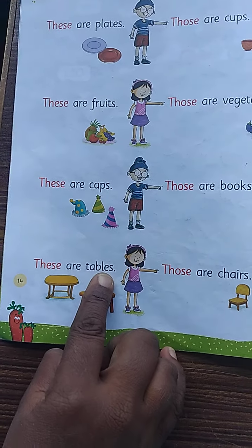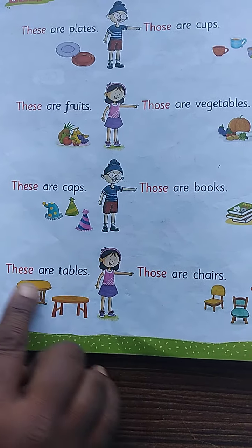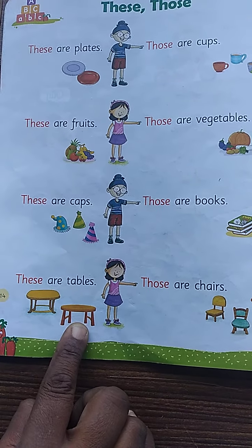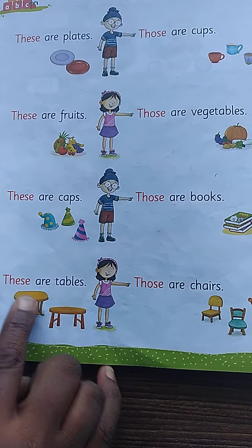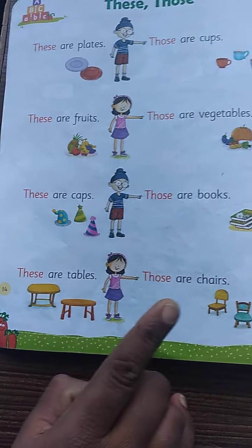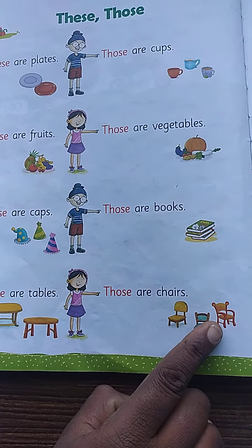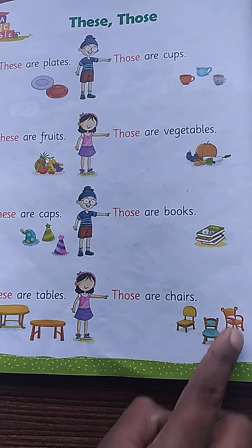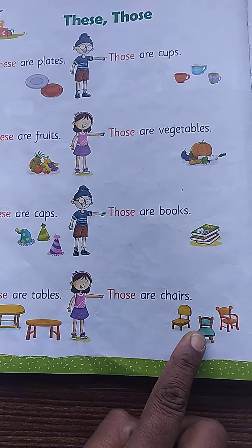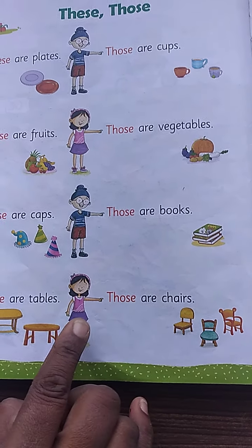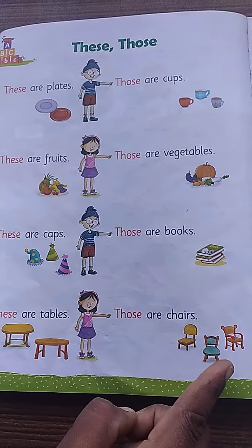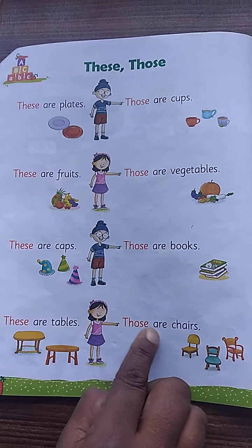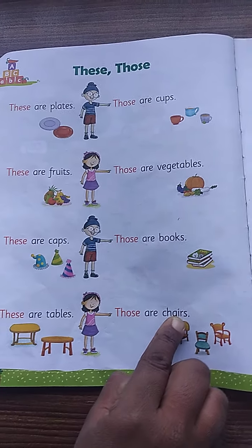These are tables. How many tables are there? Two tables — these are tables. Those are chairs. One, two, three — how many chairs are there? Three, more than one, and far from the girl. So we use here: those are chairs.